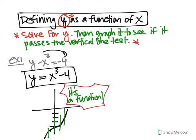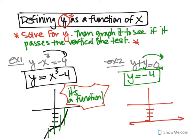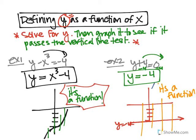Defining y as a function of x isn't that difficult — you just have to solve for y. In this next example, we want to define y as a function of x. We bring the negative 4 over to the other side by subtracting 4 from both sides. There's no x, so what you get is a horizontal line: y equals negative 4. Remember, y equals a constant is a horizontal line. If you draw a vertical line, it'll always cross it once, which means it's a function.